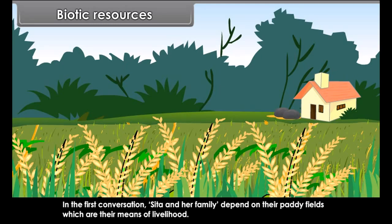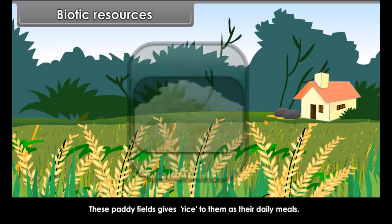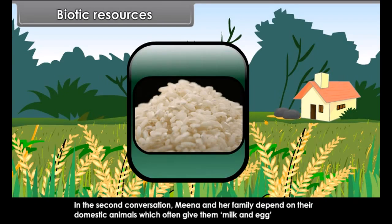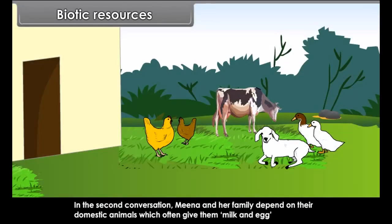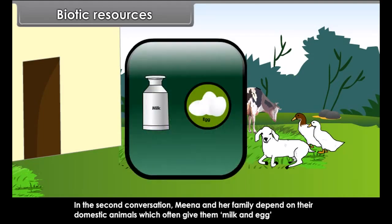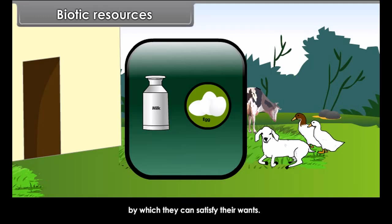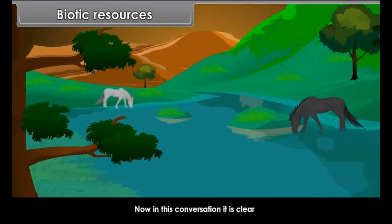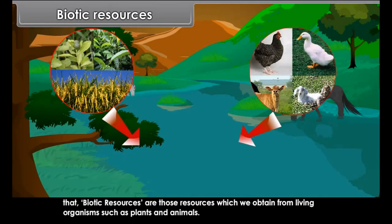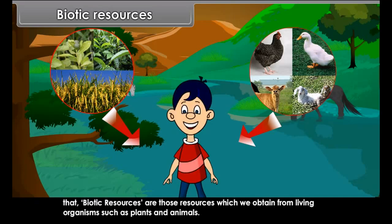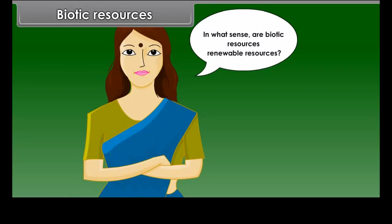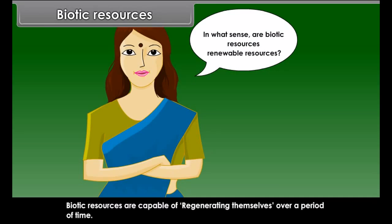In this conversation between Sita and Meena, what conclusion can we draw? In the first conversation, Sita and her family depend on their paddy fields, which are their means of livelihood. In the second conversation, Meena and her family depend on their domestic animals, which give them milk and egg to satisfy their wants. It is clear that biotic resources are those resources which we obtain from living organisms such as plants and animals.